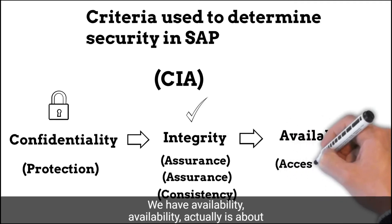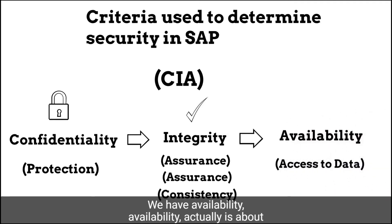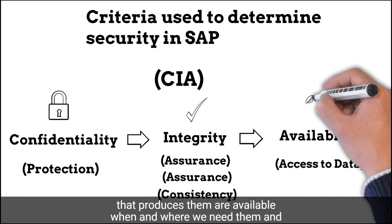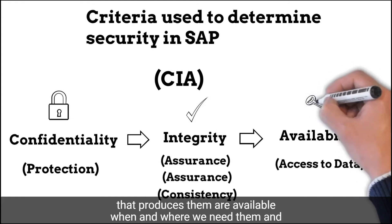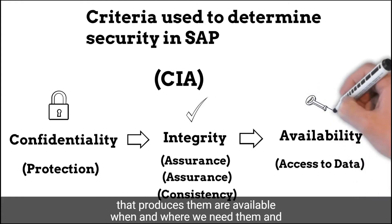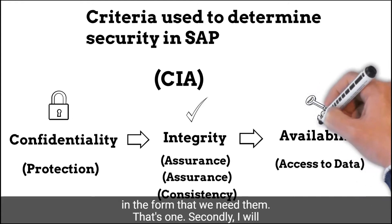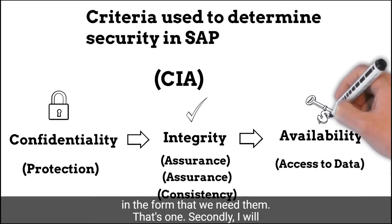Availability is about making sure that data, information, and even the systems that produce them are available when and where we need them and in the form that we need them.